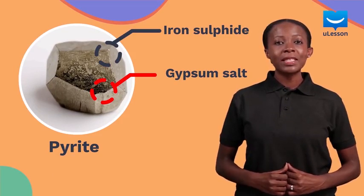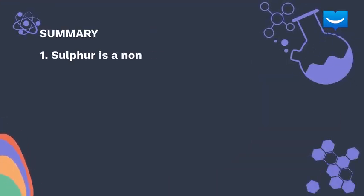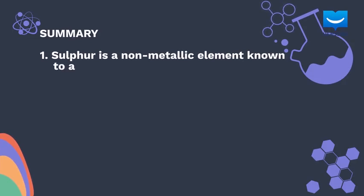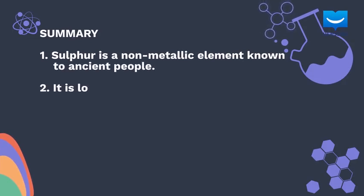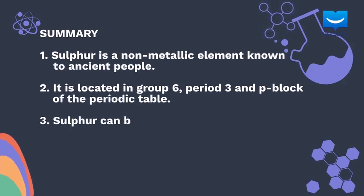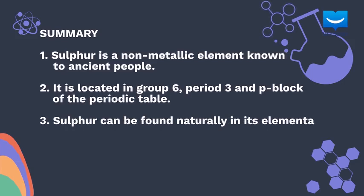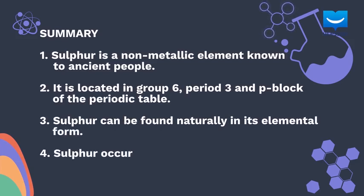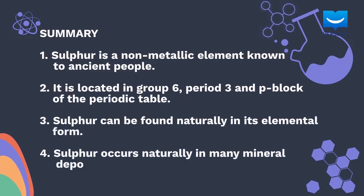Here is a summary of what we have discussed so far. Sulfur is a non-metallic element known to ancient people. It is located in group 6, period 3, and the p block of the periodic table. Sulfur can be found naturally in its elemental form. Sulfur occurs naturally in many mineral deposits. So there you have it, an introduction to sulfur. There will be a lot more in subsequent lessons. Hope to see you then.